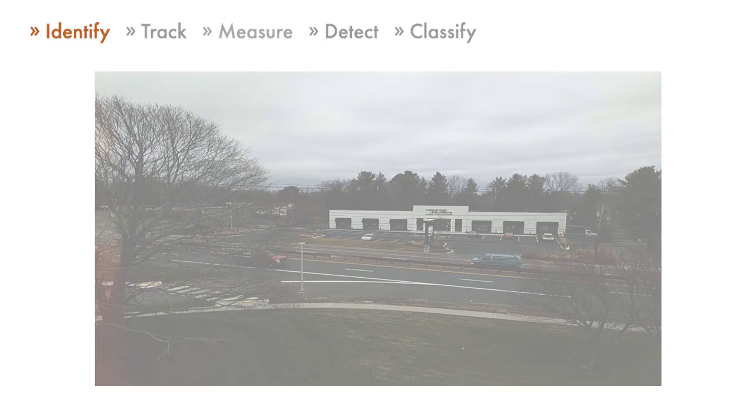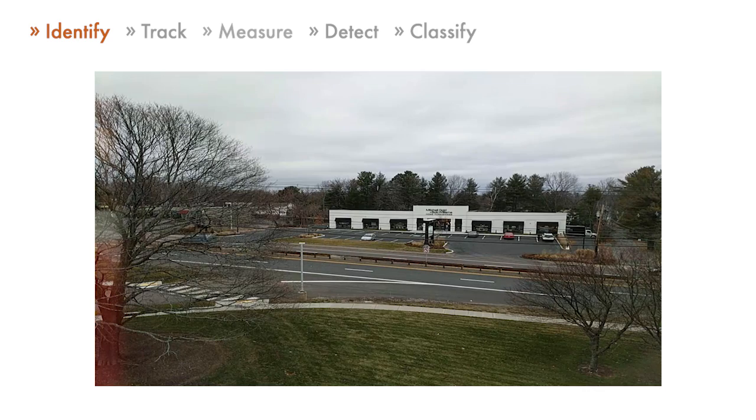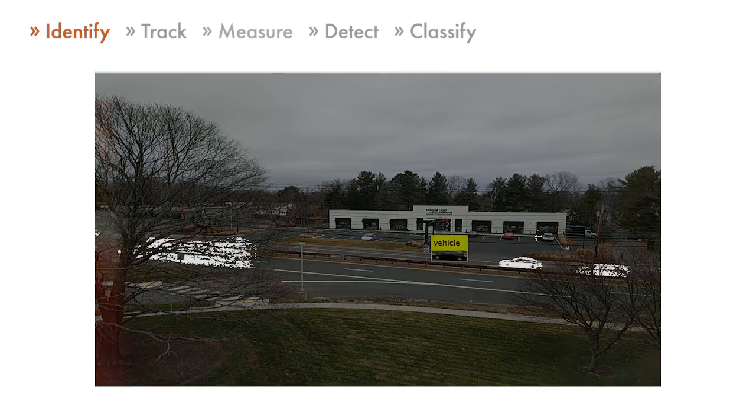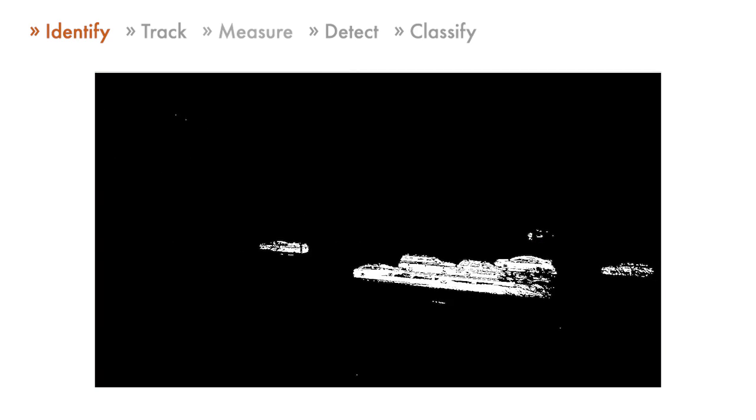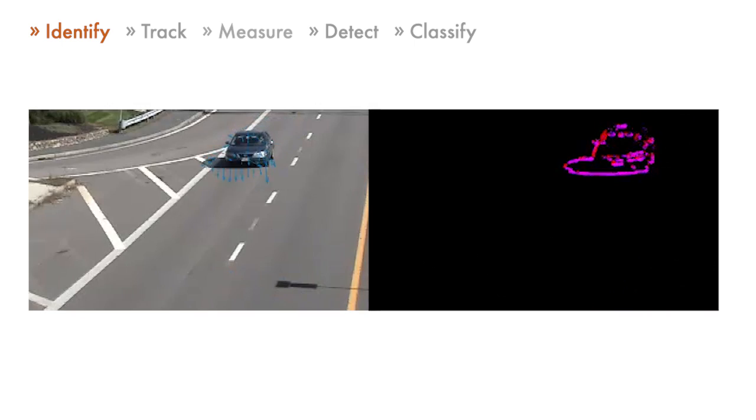First, we'll look at how computer vision identifies objects based on motion. This includes very basic techniques like image subtraction or more advanced algorithms like optical flow, taking into account groups of pixels rather than individual pixels.